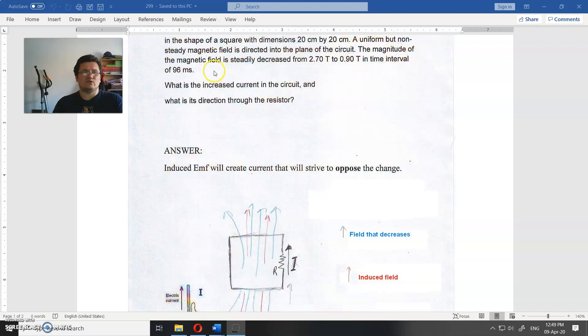The magnitude of the magnetic field is steadily decreased from 2.7 Tesla to 0.9 Tesla in the time interval of 96 ms. Question first: what is the induced current in the circuit, and what is the direction through the resistor?